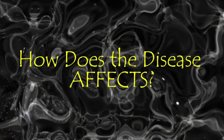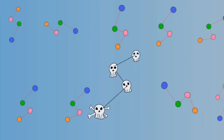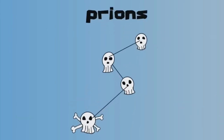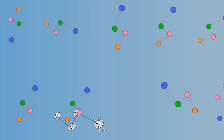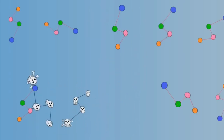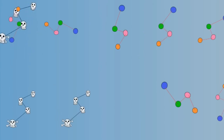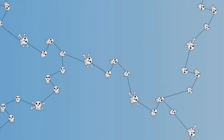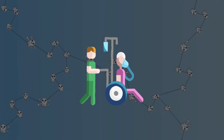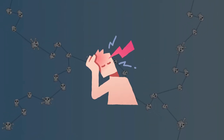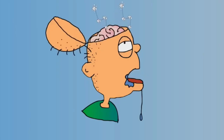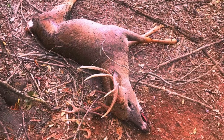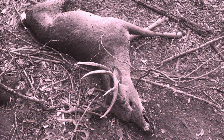How does the disease affect the body? The prions that cause the disease are misfolded proteins that affect the spinal cord and other parts of the nervous system. This leads to weakness, paralysis, and seizures. Once symptoms appear, the animals usually die within weeks or even days.